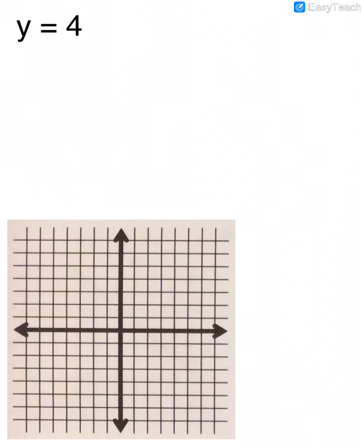Now to graph an equation that has only one variable, it's very simple. This is y equals 4. So it's telling us that our line is going to cross through the y axis at 4. So on my y axis, I'm going to go up to 4. And then because of HOY, we know that it's going to be a horizontal line. And that's it.